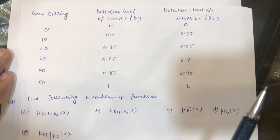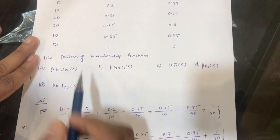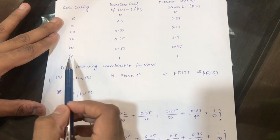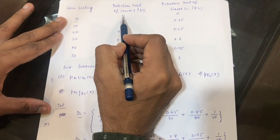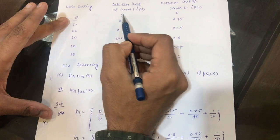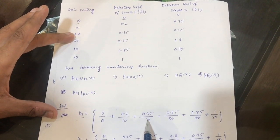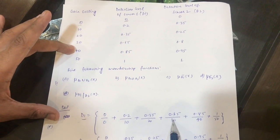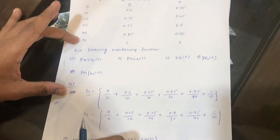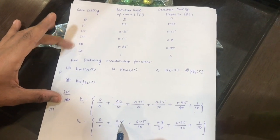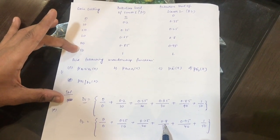First, we convert this set into a fuzzy set. For sensor D1, since these are the universe of discourse, we write them in the denominator, and these are the membership values, so we write them in the numerator. D1 equals 0/0 + 0.2/10 + 0.35/20 + 0.65/30 + 0.85/40 + 1/50. Similarly for D2: 0/0 + 0.35/10 + 0.25/20 + 0.8/30 + 0.95/40 + 1/50.